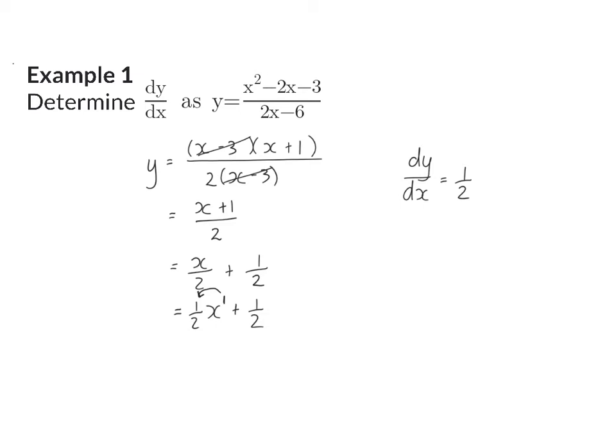And for my second term, I have a constant value, and the derivative of a constant is 0. So that means my final derivative is a half.